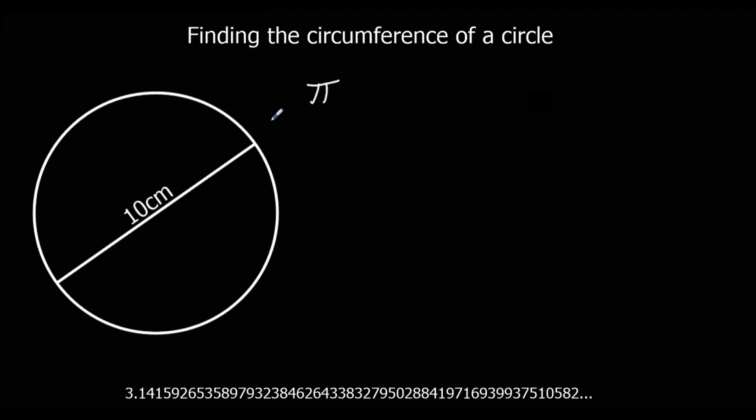Pi is the special relationship between a circumference and a diameter of a circle. We can use it to work out the circumference. So the circumference of a circle is equal to pi times the diameter of the circle. So if you take pi and times it by the diameter of the circle, in this case 10, we'll find the circumference of the circle.